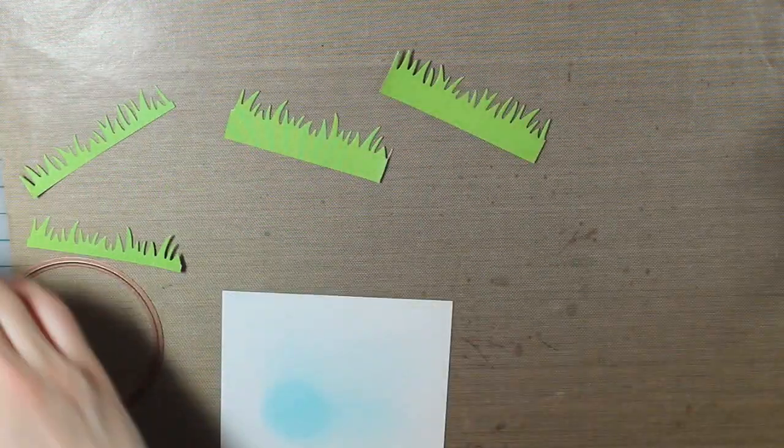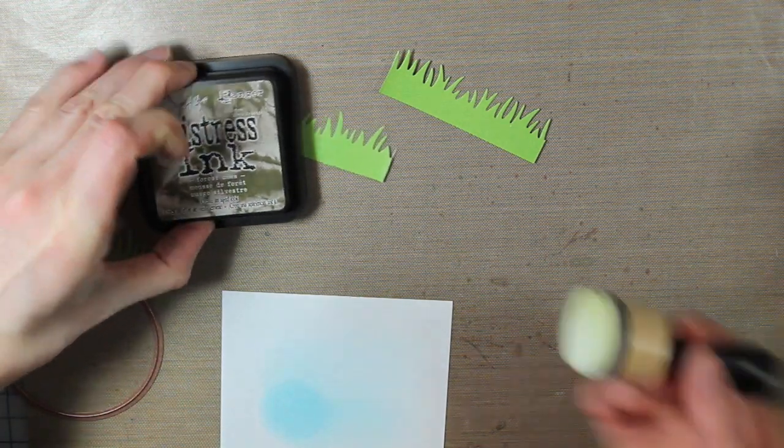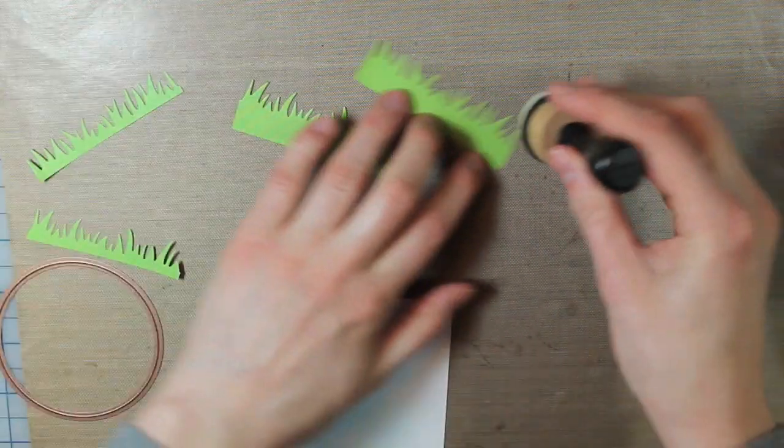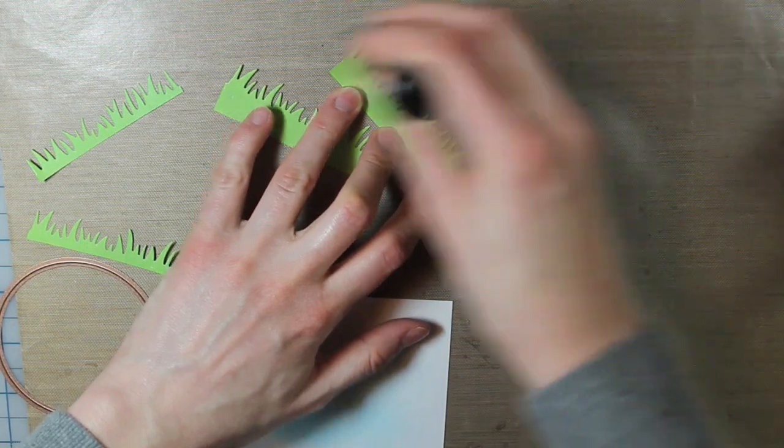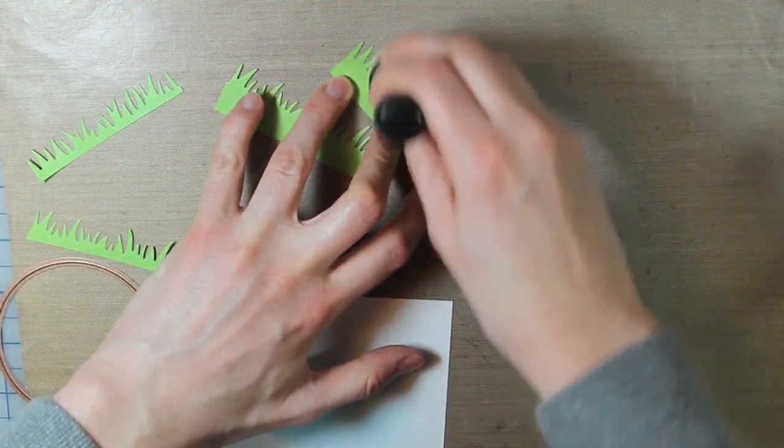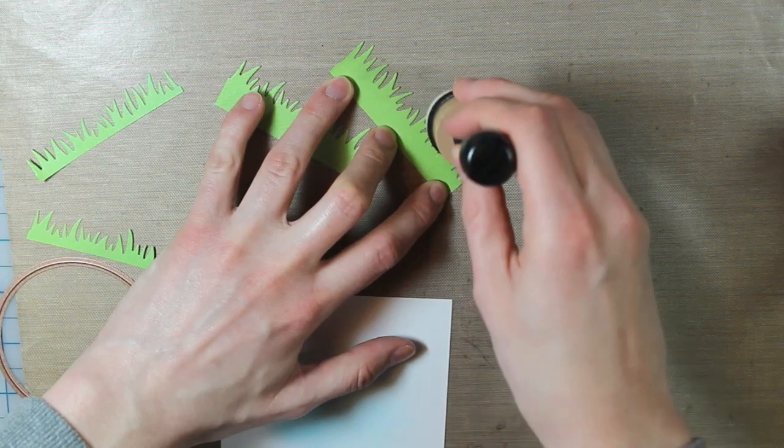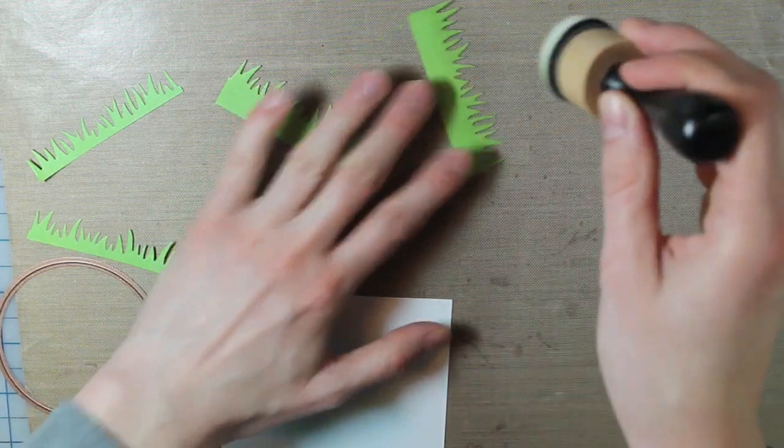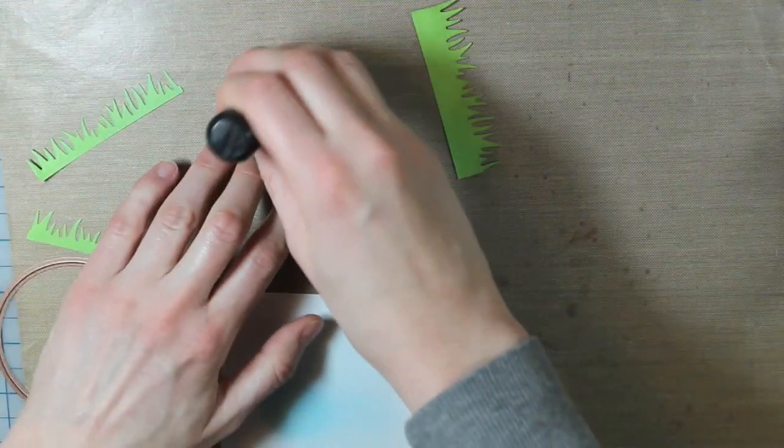I'm actually going to ink up two of those with a little bit of forest moss. I'm just putting that on the edges. That way it creates a little bit of difference between each of the blades of grass so that they don't all kind of blend in together. It just makes it a little bit darker.